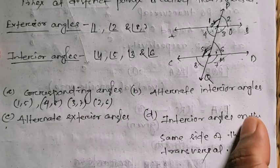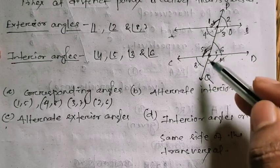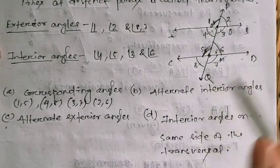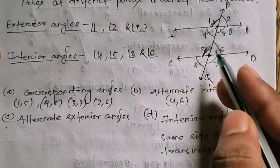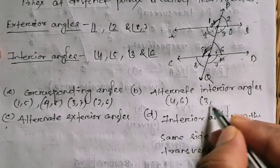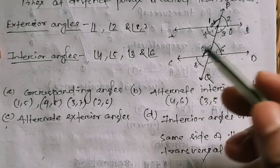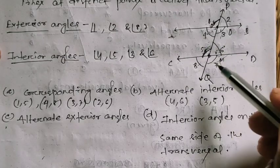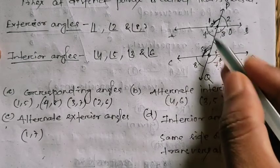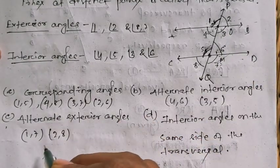For alternate interior angles, the interior angles are 3, 4, 5, and 6. Alternate means opposite — so angle 4 is the alternate interior angle of angle 6, and angle 3 and angle 5 are also alternate interior angles. For alternate exterior angles, angles 1, 2, 7, and 8 are exterior; 1 and 7 are alternate exterior angles, and 2 and 8 are also a pair of alternate exterior angles.